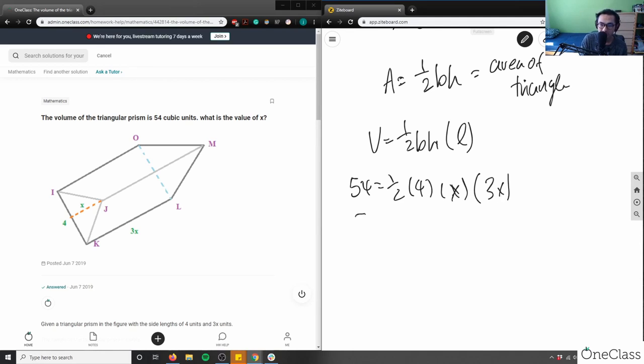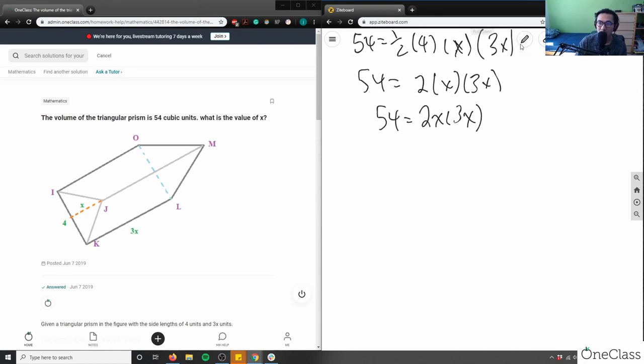So I can solve for this. So 54, half times 4 is just 4 divided by 2, which is 2 times x times 3x here. I have 54 equals 2 times x is 2x times 3x. And then what I'm going to get is 2 times 3 is 6x squared. 54 equals 6x squared.